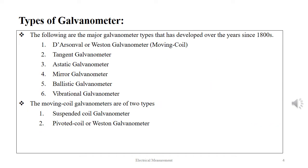The galvanometer was developed in the early 18th century. The Arsonval or Weston galvanometer come under moving coil galvanometers. Then there is the tangent galvanometer, astatic galvanometer, mirror galvanometer, and ballistic and vibrational galvanometer. Moving coil galvanometers are of two types: suspended coil galvanometer and pivoted coil or Weston galvanometer.